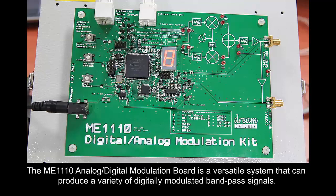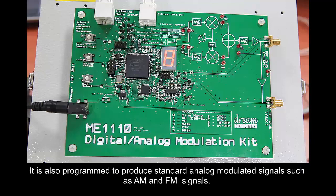The ME1110 analog digital modulation board is a versatile system that can produce a variety of digitally modulated band pass signals. It is also programmed to produce standard analog modulated signals such as AM and FM signals.